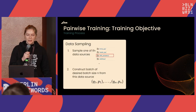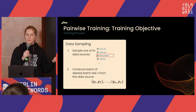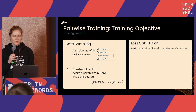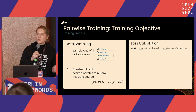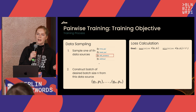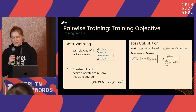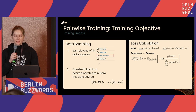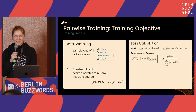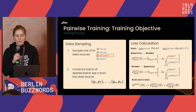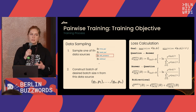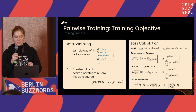The training objective during pairwise training: we store data in S3, construct a batch of pairs, and calculate the loss by maximizing similarity between a query and its positive while minimizing similarity between the query and all other positives in the batch. We also do this bidirectionally — using the answer for a particular question to maximize its similarity and minimize the similarity between that answer and all other questions in the batch. This is called bi-directional InfoNCE.